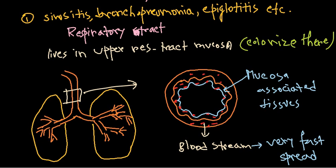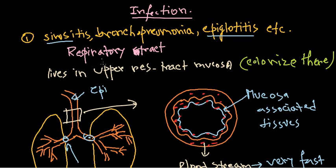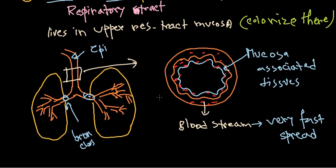From the upper respiratory tract mucosa, the bacteria spread via the bloodstream. If they colonize in the sinus, it causes sinusitis. If they reach the epiglottis, it causes epiglottitis. If they colonize in the bronchus regions, it causes bronchopneumonia. The disease is named depending on where they colonize.